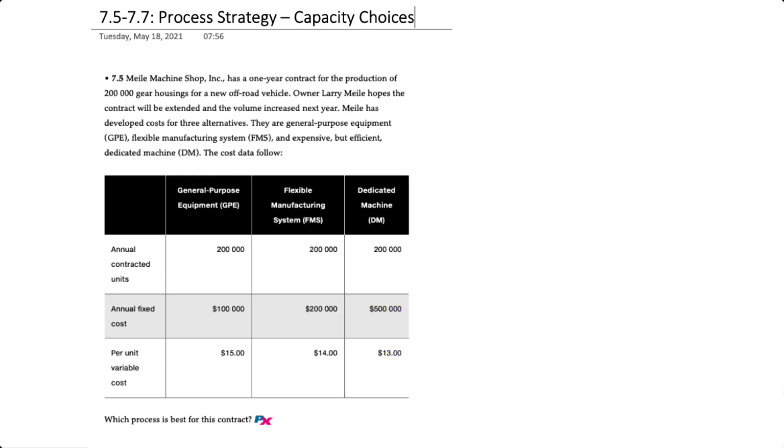Our first objective is to determine which process is best for the contract. We want to determine the total cost to produce 200,000 units under each production method. For the GPE we'll take $100,000 in fixed costs and add 200,000 units times a variable cost of $15 to give us $3.1 million in total cost.